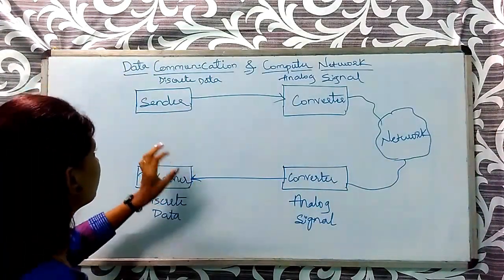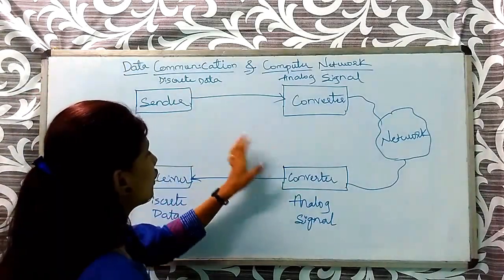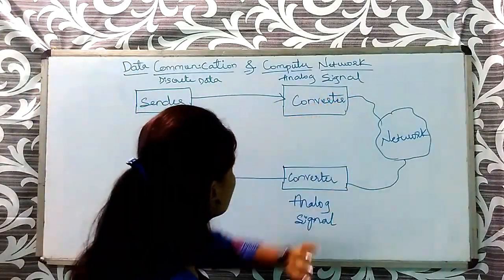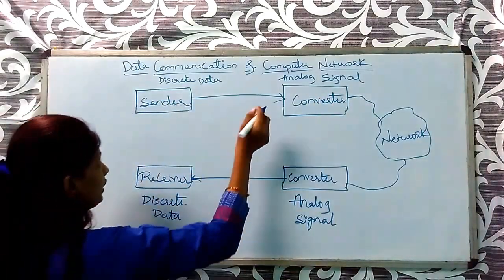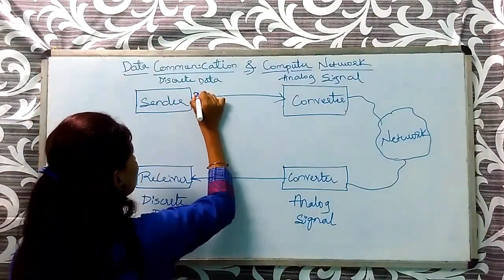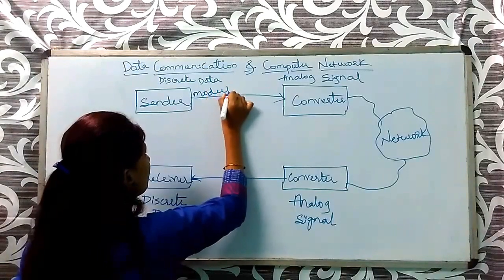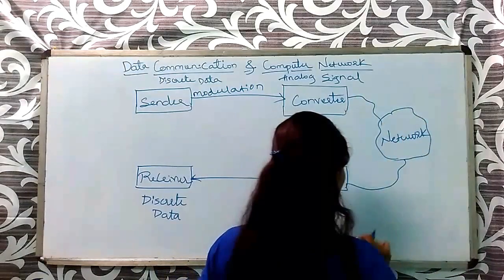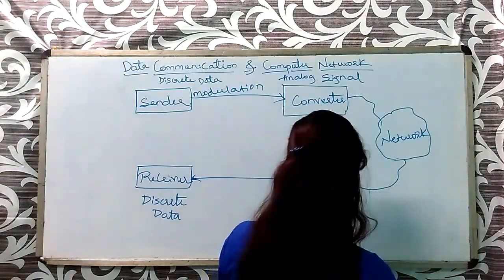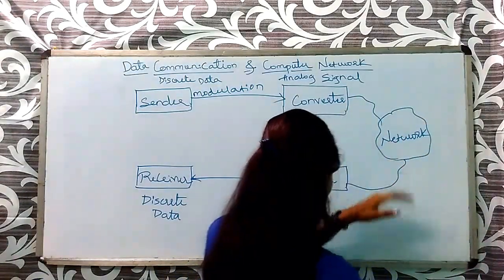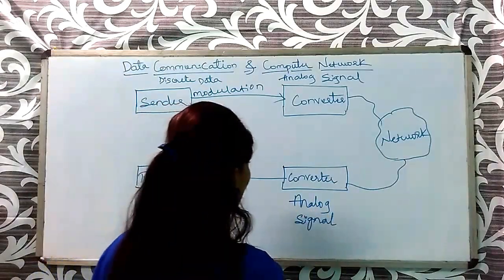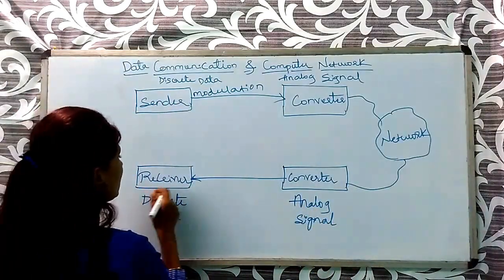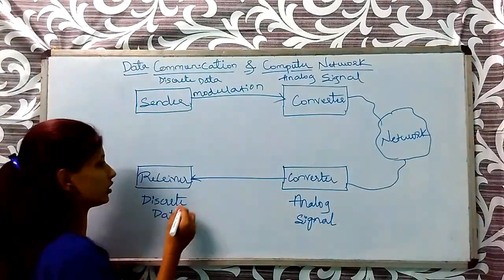The sender sends discrete data and uses a converter to convert discrete data to an analog signal. This process is called modulation. The signal then passes through the network. At the receiving end, a converter converts the analog signal back into discrete data, and this process is called demodulation.